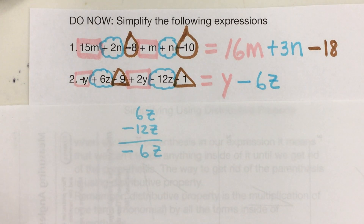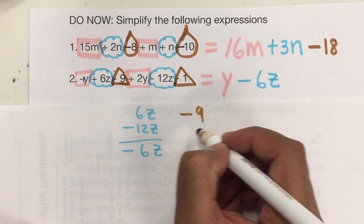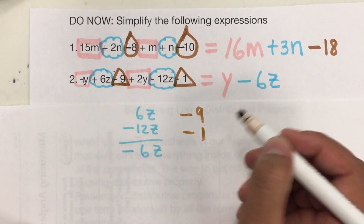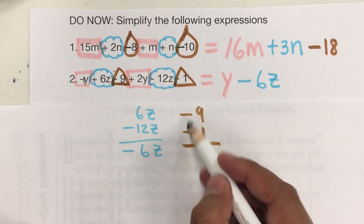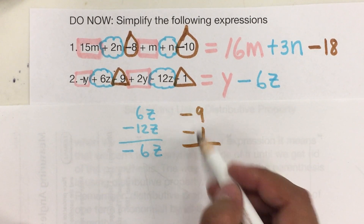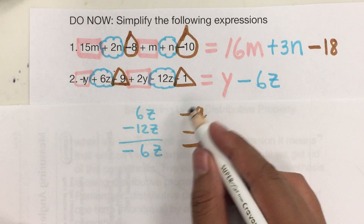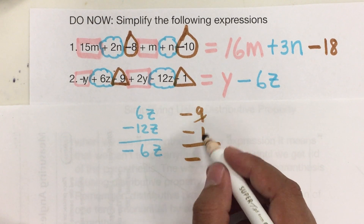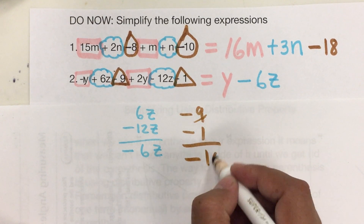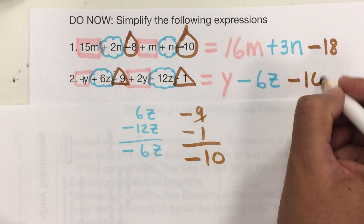And finally, we have negative 9 and negative 1. When we have the same sign, we add them and keep the sign of the bigger one. So it's going to be negative 9 plus 1 equals 10, so negative 10.